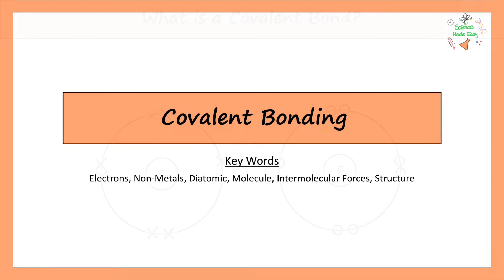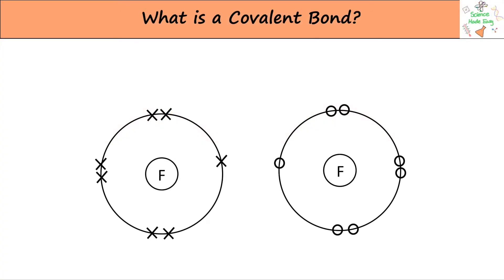First let's look at what a covalent bond is. It's a bond formed between non-metals, the ones found to the right of the periodic table. It's a shared pair of electrons between two atoms.